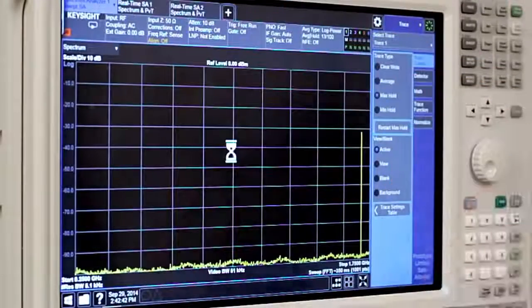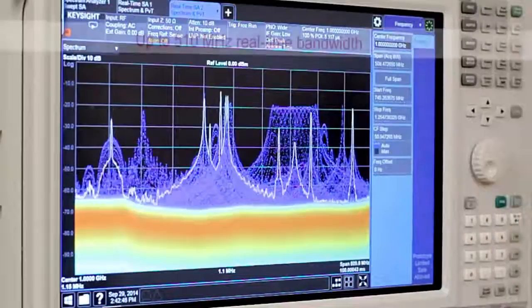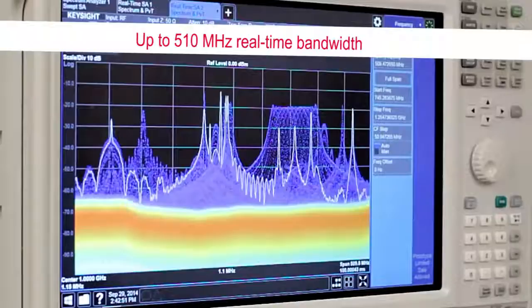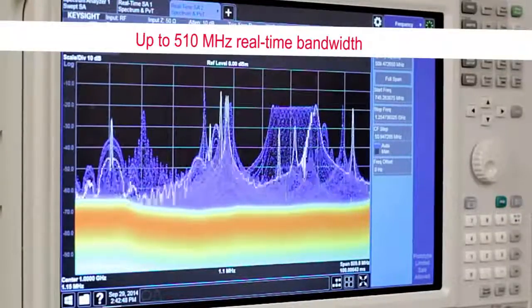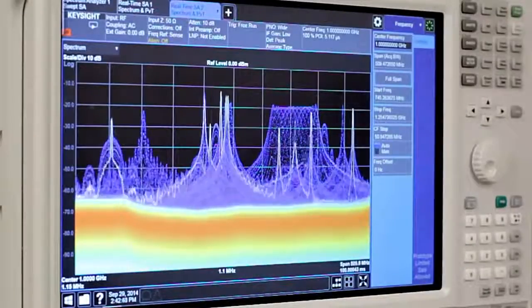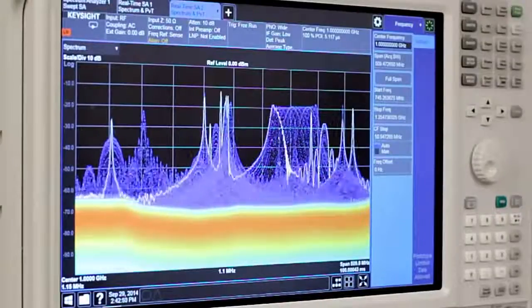The UXA is capable of significantly more real-time bandwidth than is currently available in the industry at approximately 510 MHz. Not only does this help in visualizing more spectrum, but in general, the larger the bandwidth, the smaller signal you are guaranteed to capture. In this case, it becomes apparent very quickly that we can capture all the signals virtually immediately, the most powerful way to view the intermittent signal environment.